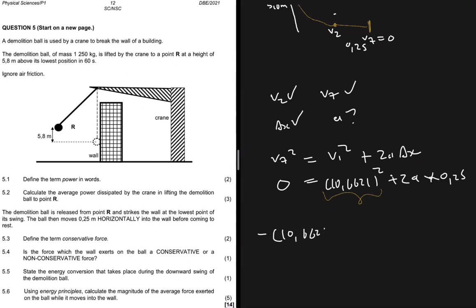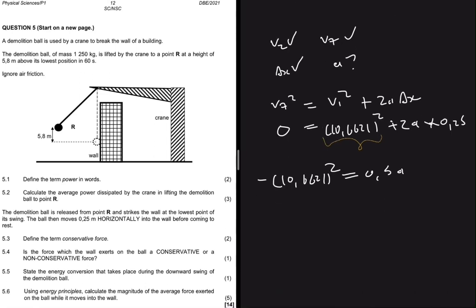That's 2 multiplied by 0.25. So if you make a the subject of the formula, you will get, let me put that in my calculator, 10.6621 squared divided by 0.5.